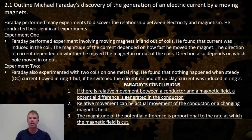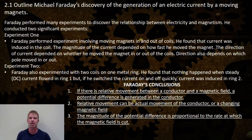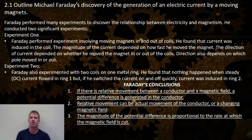This section outlines Michael Faraday's discovery of the generation of electric current by moving magnets. In 1831, Michael Faraday performed many experiments to discover the relationship between electricity and magnetism, and how they are interconnected. He conducted two significant experiments.